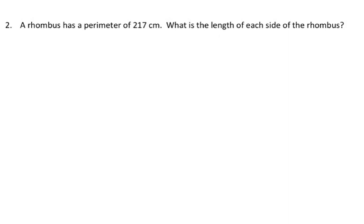We're going to look at number two. It says a rhombus has a perimeter of 217 centimeters. What is the length of each side of the rhombus? Let's start with the target sentence.